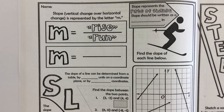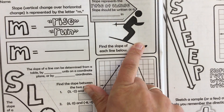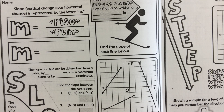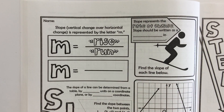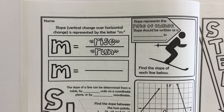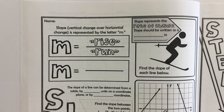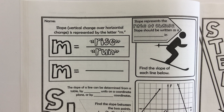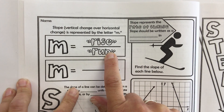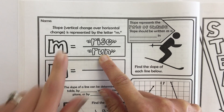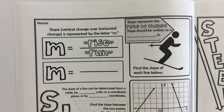We are talking about slope today. When you see a little skier, it's because we use slope to describe things we already do and see in real life, like the slope of a ski hill, the slope of a roof, or the slope of stairs. Basically, slope is measured by the rise over the run — the vertical change over the horizontal change. Slope is represented by the letter M, which comes from a French word.